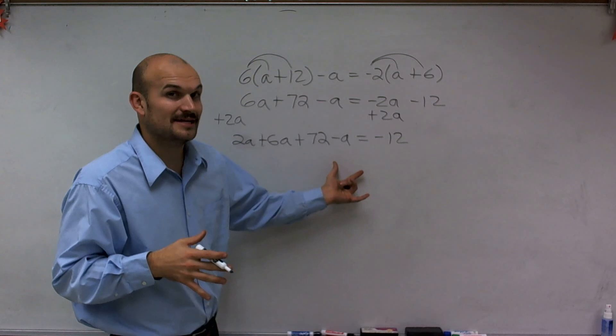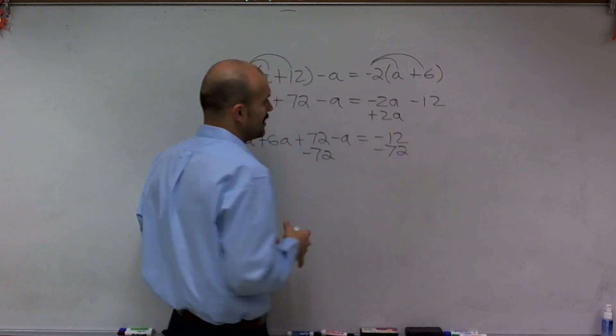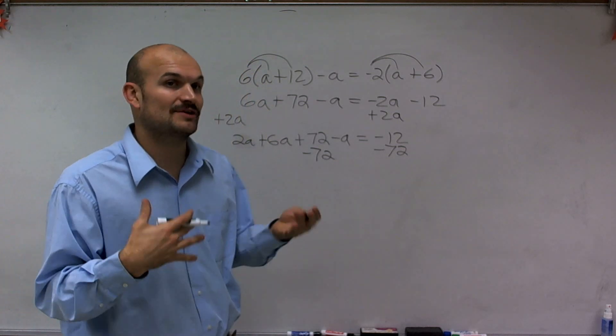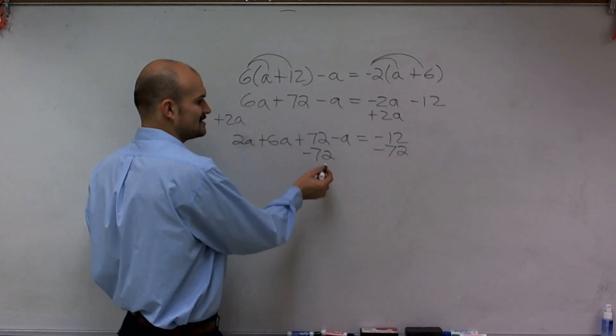Then, I almost have all the a's by themselves. But before I do that, I'm going to subtract the 72 on both sides. And remember, it's an equation. So whatever you do on one side, you have to do on the other side, like adding the 2a onto both sides. Now by subtracting the 72, again, that's going to give me zero.